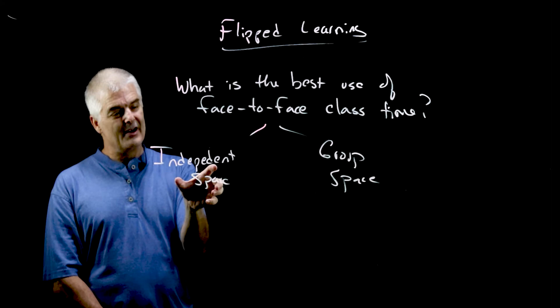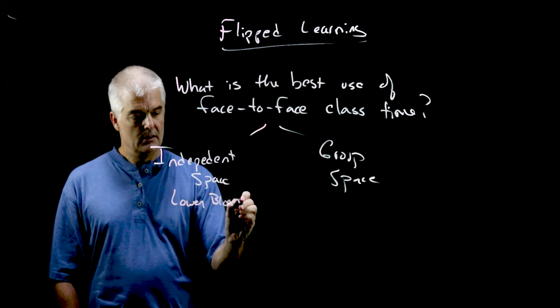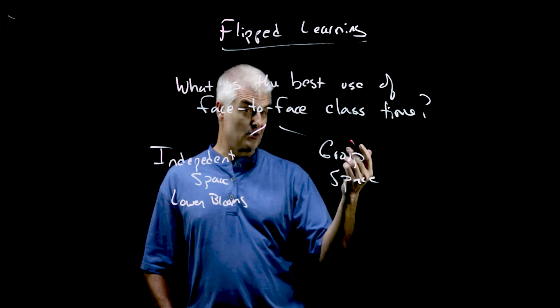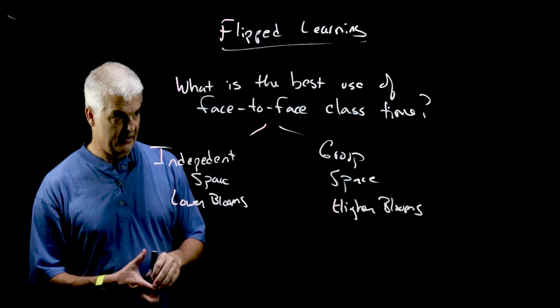The independent space is where the students are going to work alone. And here you want to do lower Blooms. The group space is when you're face-to-face in your classroom. By the way, face-to-face could be face-to-face in a Zoom room. If you're teaching in the pandemic or post-pandemic or online. And here you want to focus on higher Blooms.